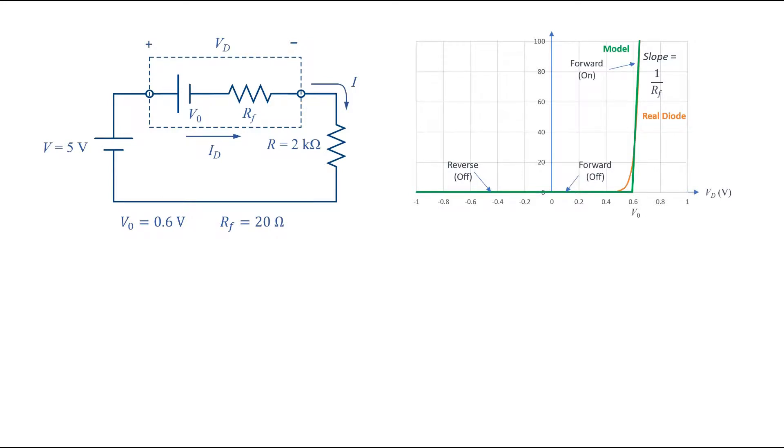This is a very simple linear circuit and current can be found by writing a KVL in this loop.